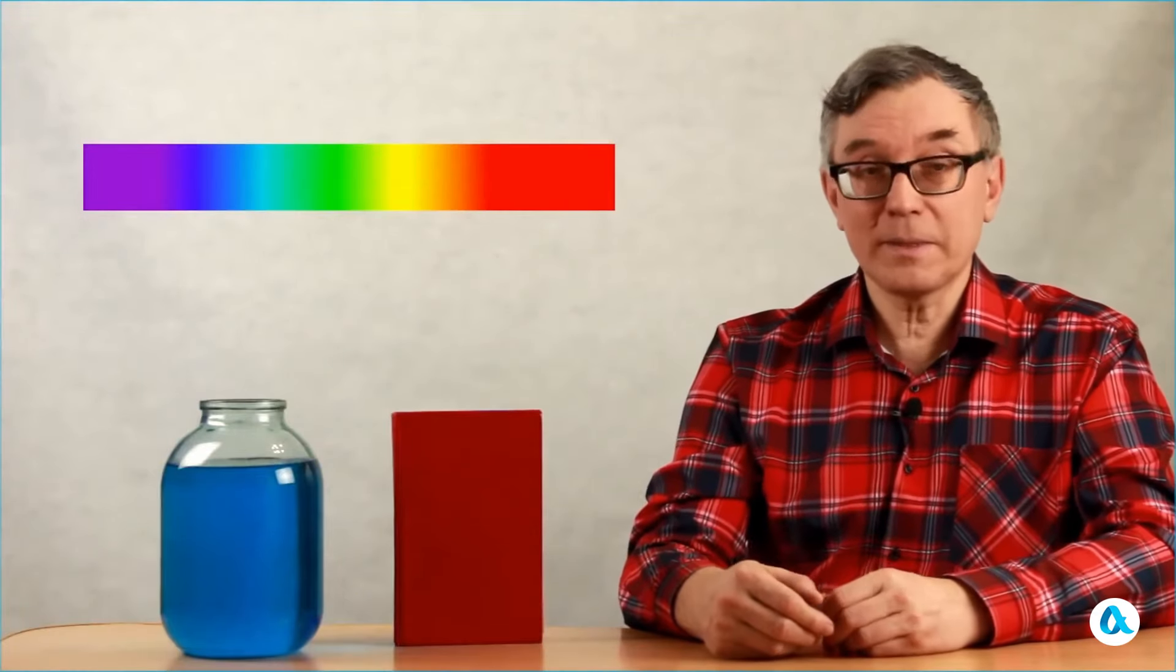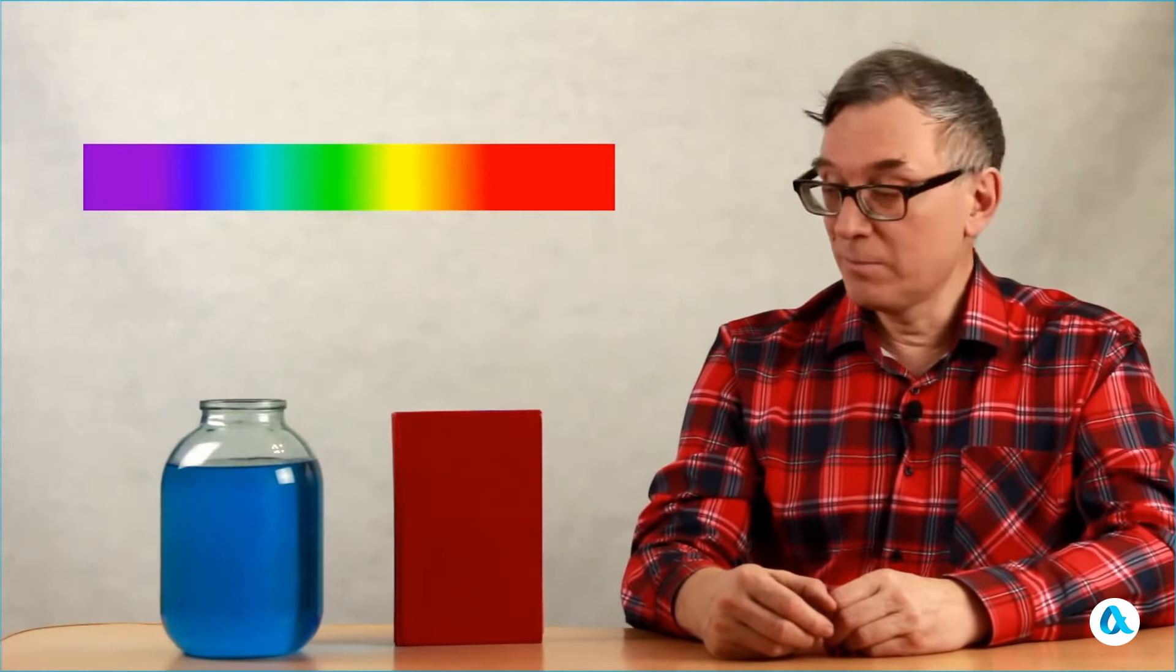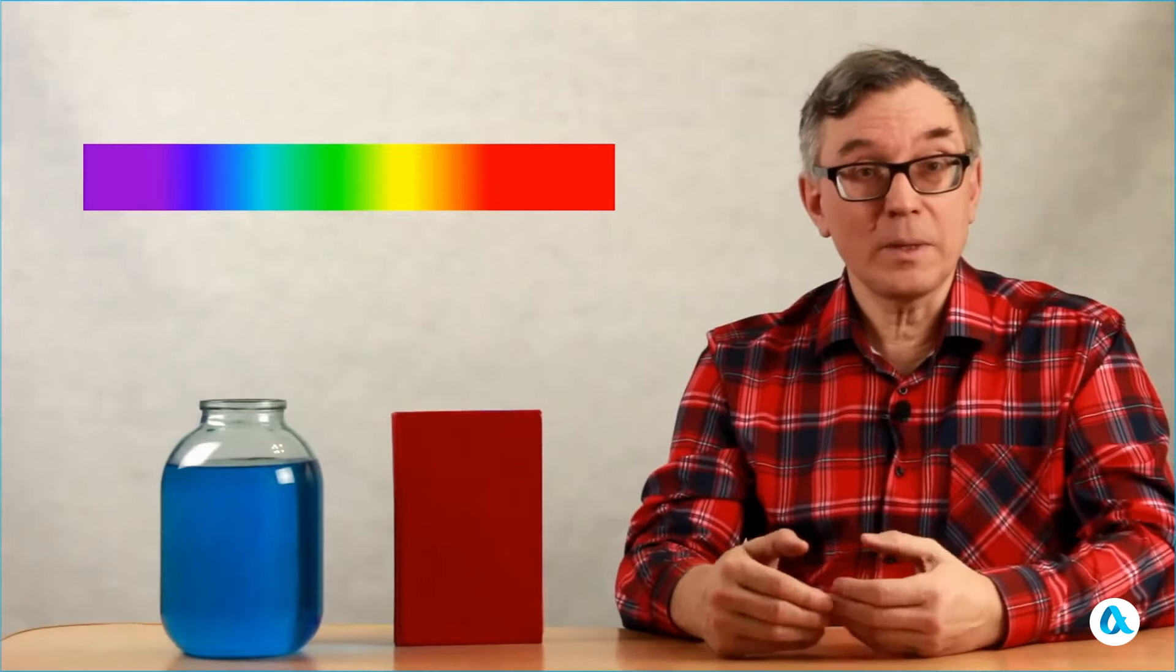Now, let's examine this jar. The water inside it has a blue color. The light from the white screen positioned behind the jar illuminates it. But the dye contained in the jar absorbs all wavelengths of light except for the blue portion of the spectrum.